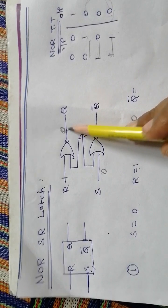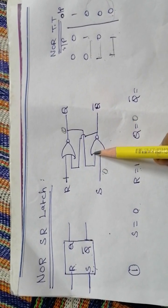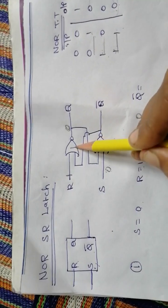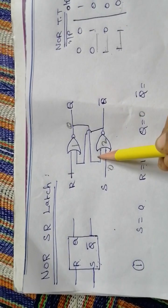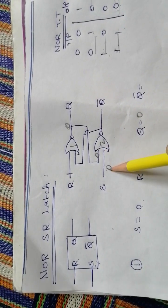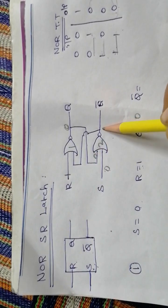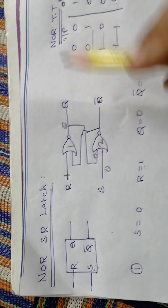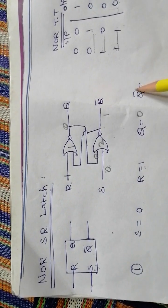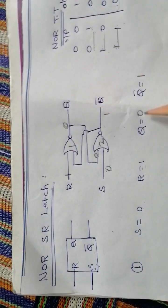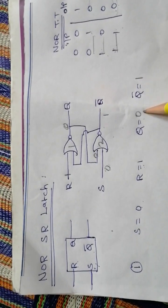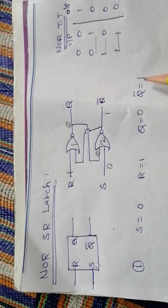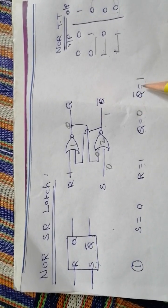The Q value of 0 is fed back to one of the inputs of the second NOR gate. Now both inputs to that gate are 0 and 0. The 0,0 combination gives output 1, so Q bar equals 1. This satisfies the latch condition — Q and Q bar are always complementary.